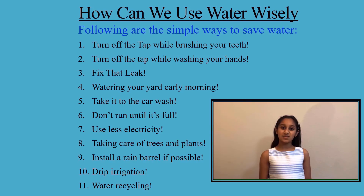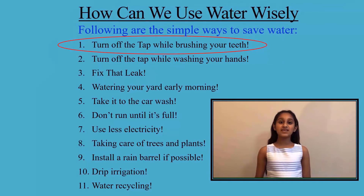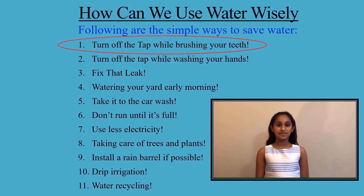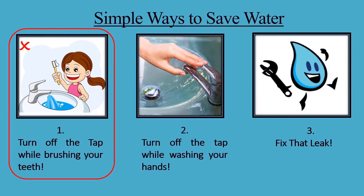How can we use water wisely? Here are simple ways to save water. Number one: turn off the tap while brushing your teeth. Don't let all that water go down the drain while you brush. Turn off the tap after you wet your brush and leave it off until it's time to rinse. Just by turning off the tap while brushing your teeth in the morning and before bedtime, you can save up to eight gallons of water — that adds up to more than 200 gallons a month.